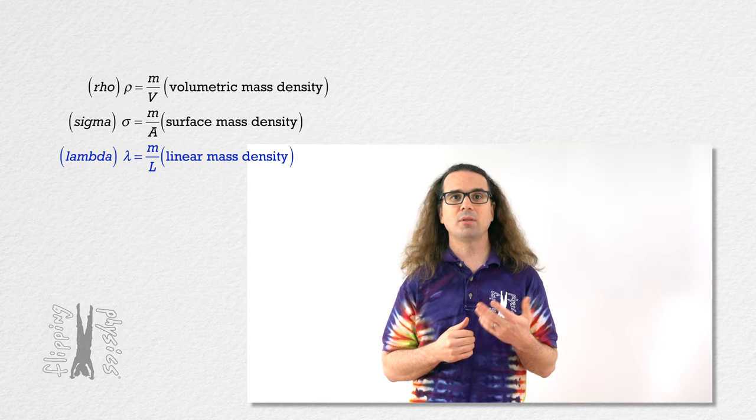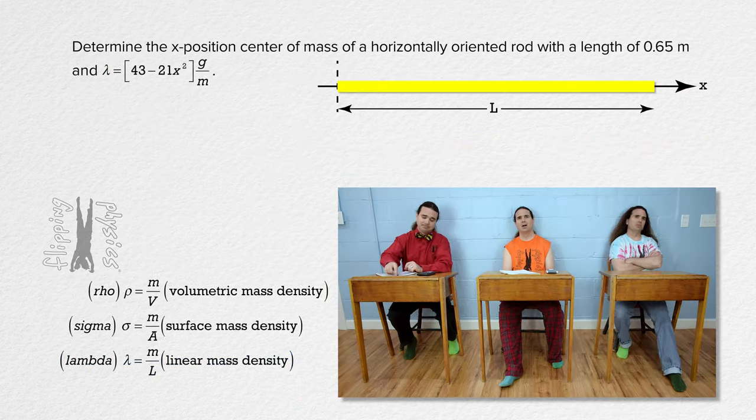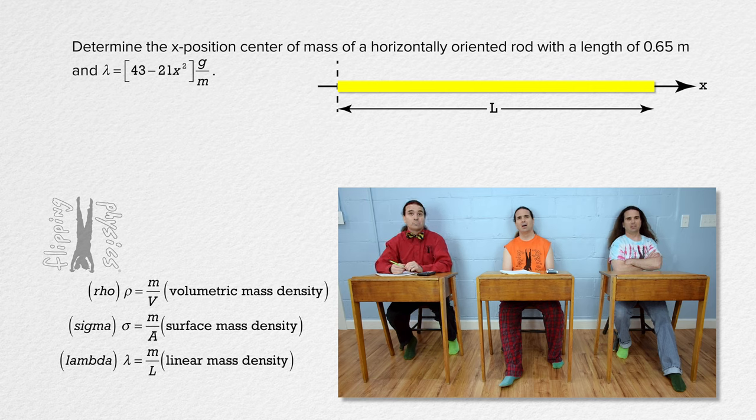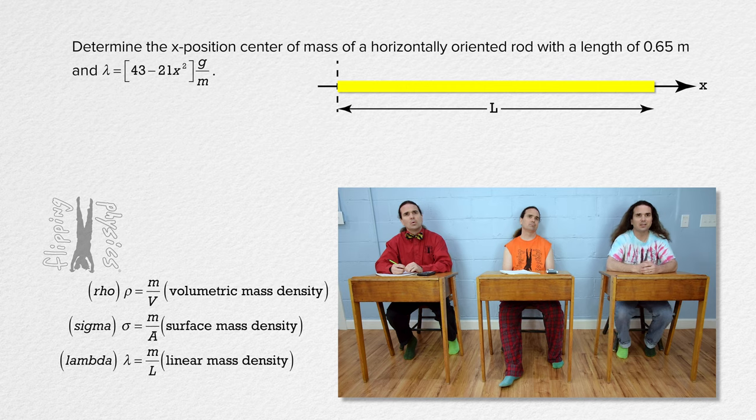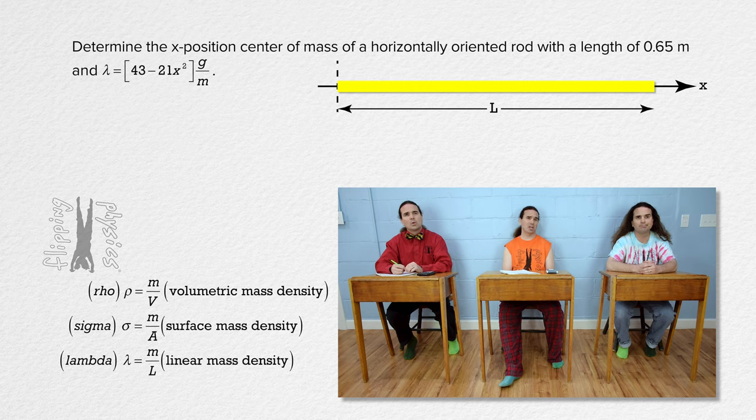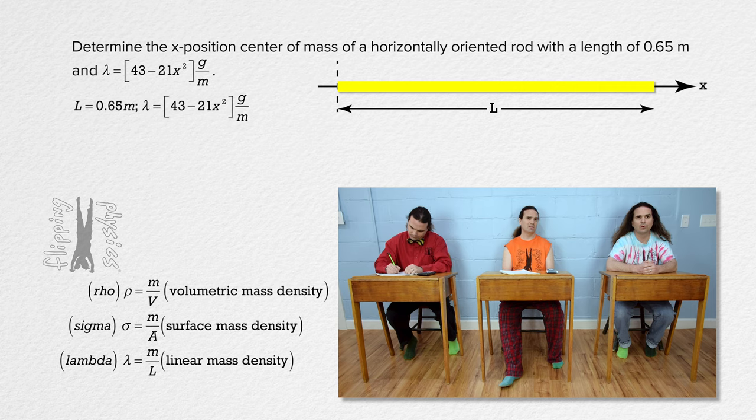Please read the problem and Bobby, please translate. Determine the x-position center of mass of a horizontally oriented rod with a length of 0.65 meters and lambda linear mass density equal to 43 minus 21x squared grams per meter. Well, our knowns are pretty obvious. Length equals 0.65 meters, linear mass density equals 43 minus 21x squared grams per meter, and we are trying to find the x-position center of mass.